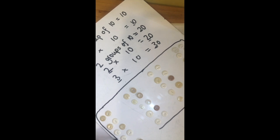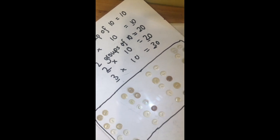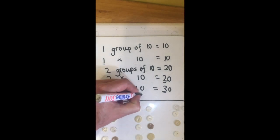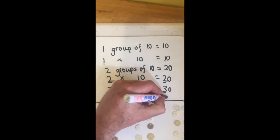I need to turn it around. I've got four groups of ten there. Four times ten equals forty.